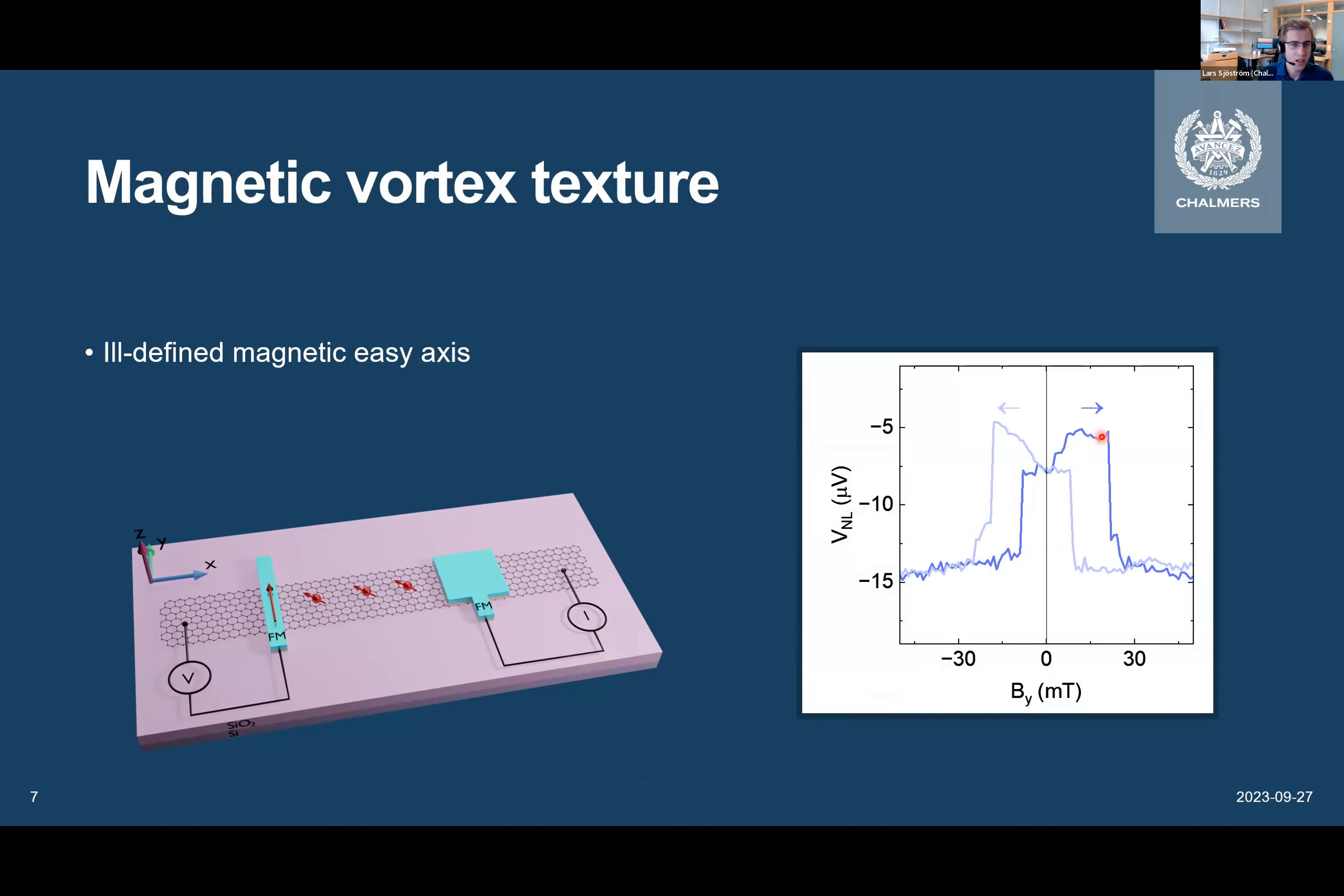And we also see that the spin valve signal is very complicated. We have some switching before zero, then some gradual change, and then there is two steps going down. So, this is a bit hard to understand. But if we compare it to our previous measurements, we can identify the contribution from this detector contact, which is the same in all the measurements. And that is this first sharp switch here. So, if we remove that contribution, we end up with this. And this is all coming now from only the square contact.